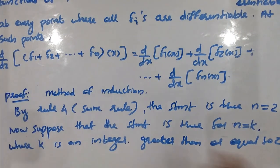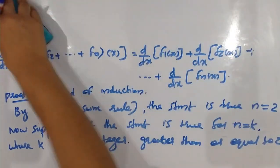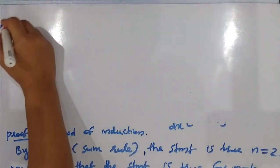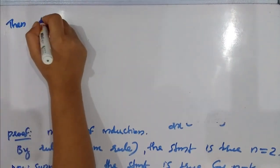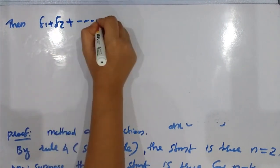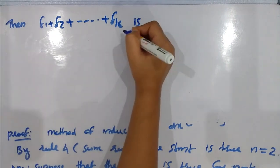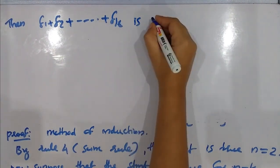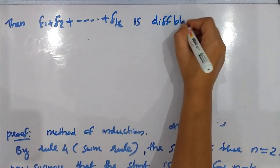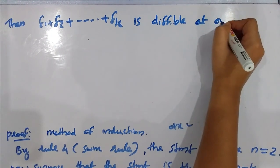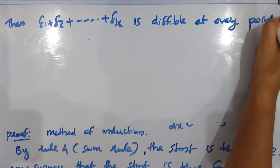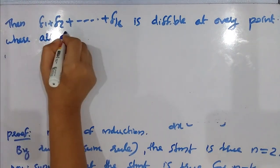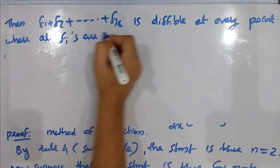Then assume the statement is true for n equal to k. Then f1 plus f2 plus etc. plus fk is differentiable at every point where all fi's are differentiable.